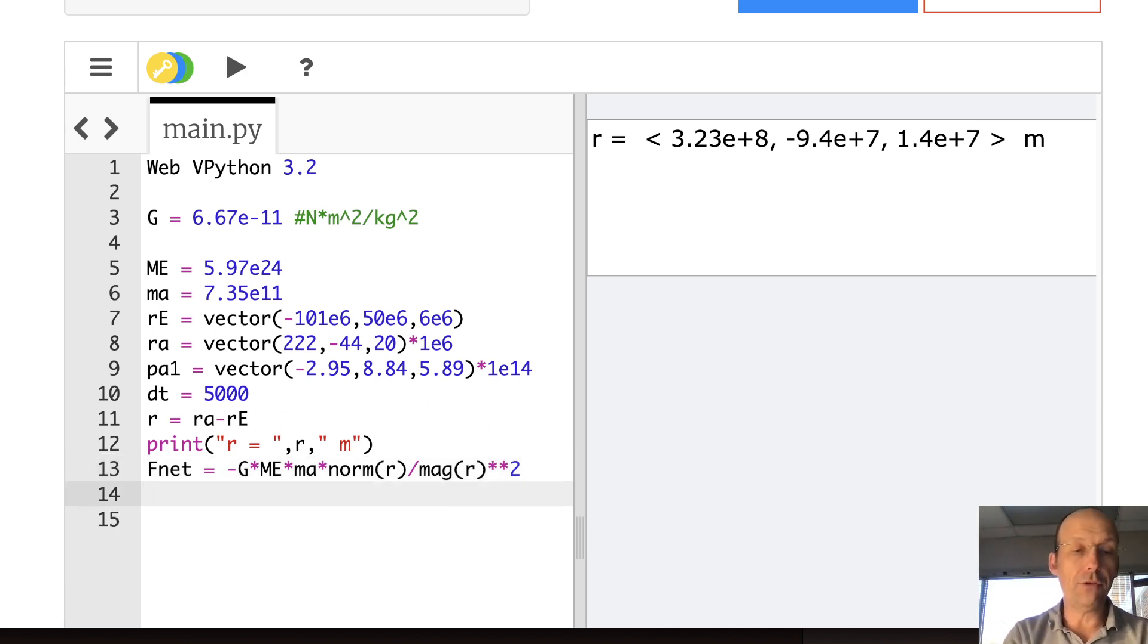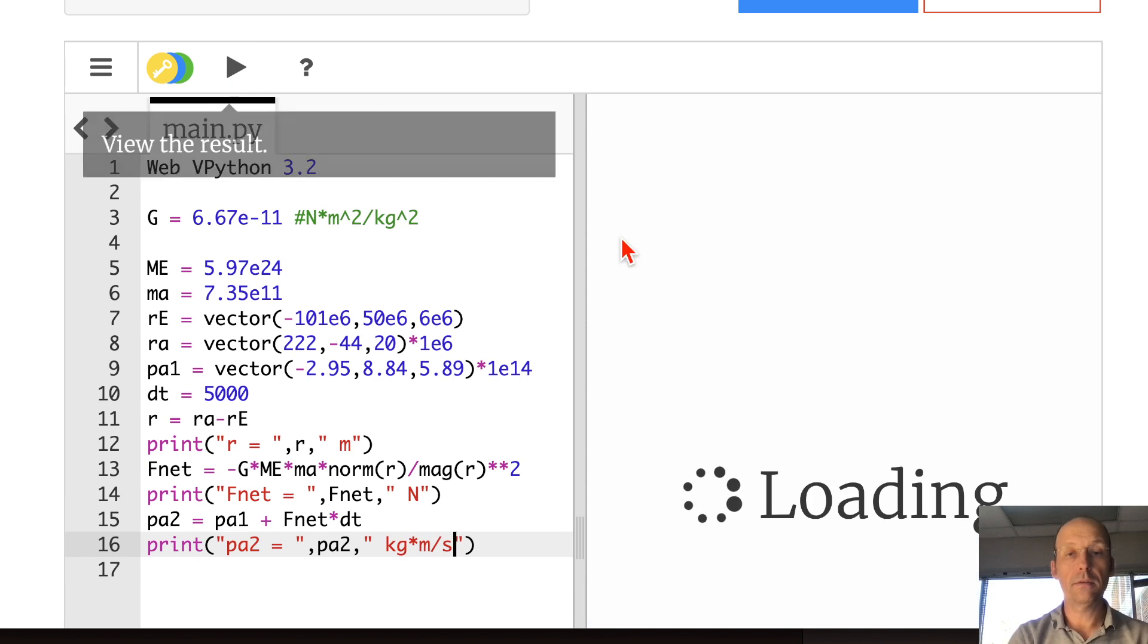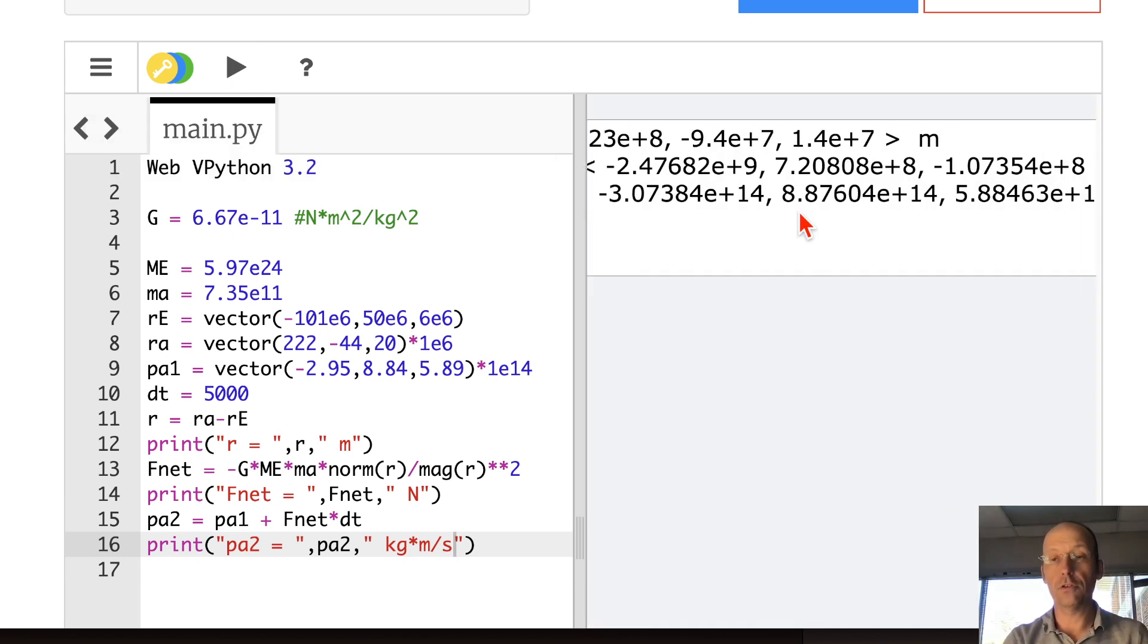So now I have the net force and I'm pretty much done. If you want to print that out, you can. Print F net equals F net Newtons. And then I can update the momentum. PA2 equals PA1 plus F net times DT. Print PA2 equals PA2 kilograms meters per second. Run. There it is. There's your momentum.